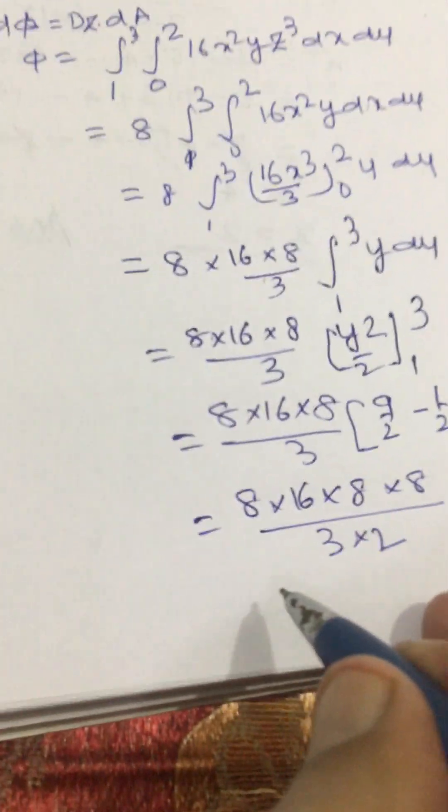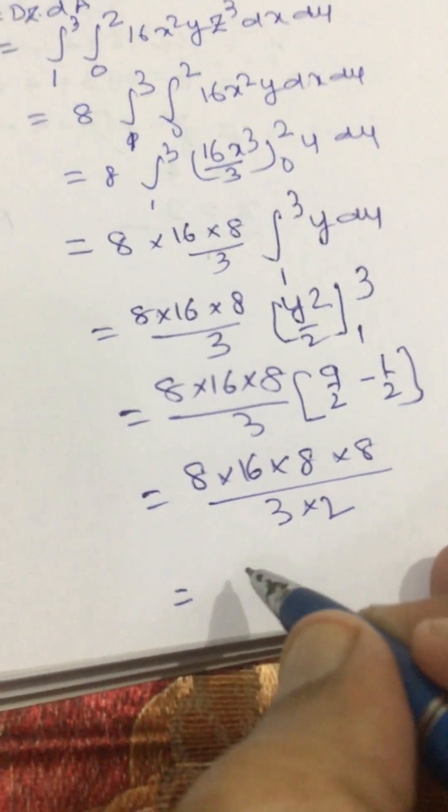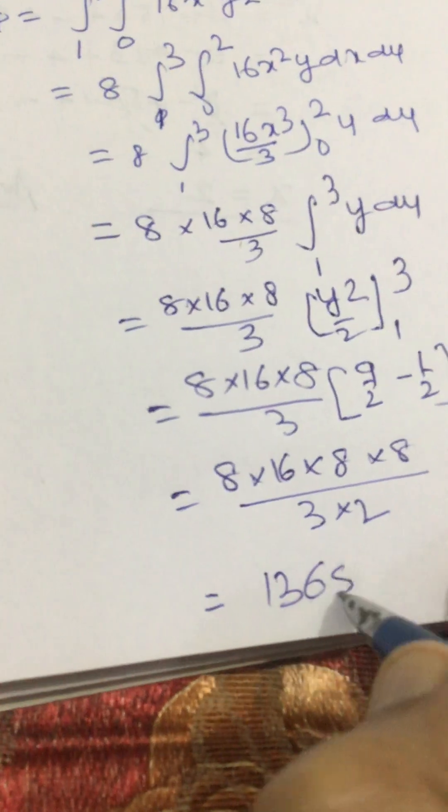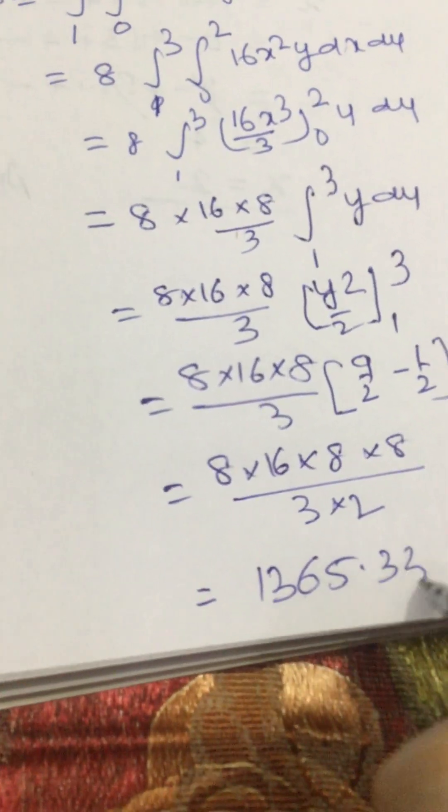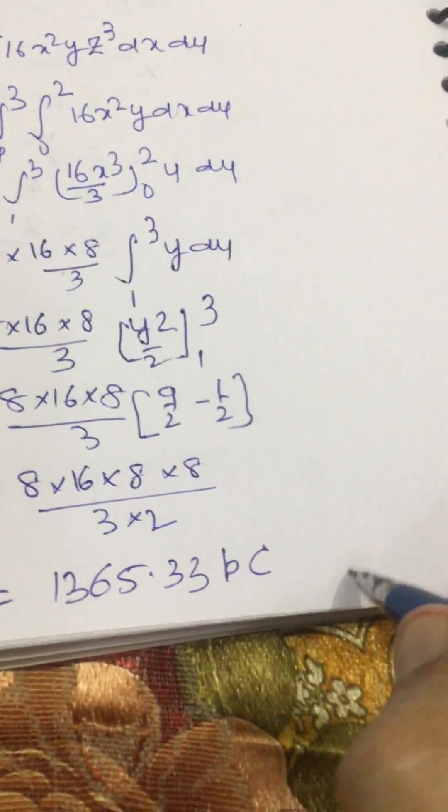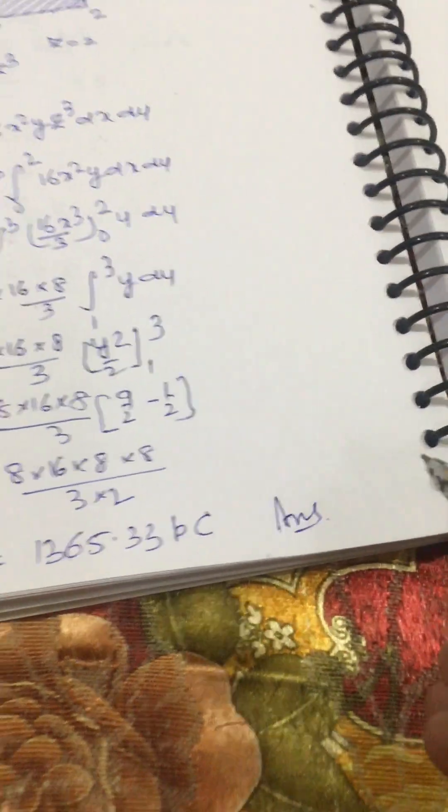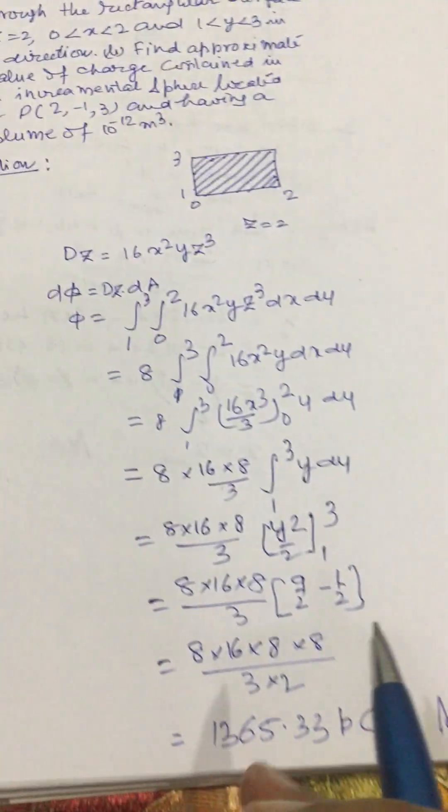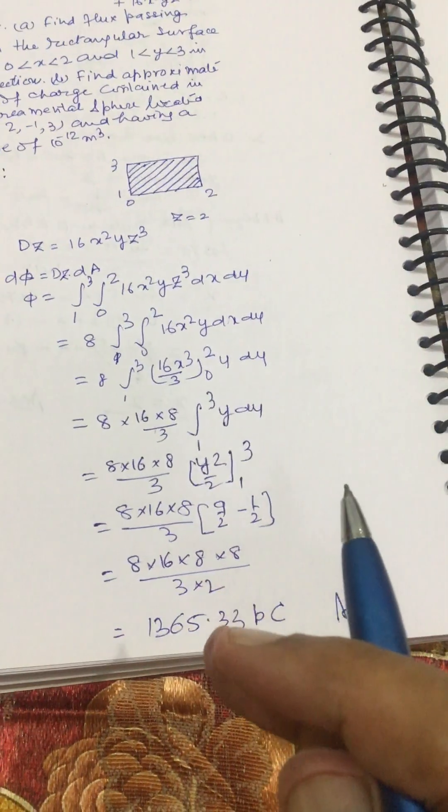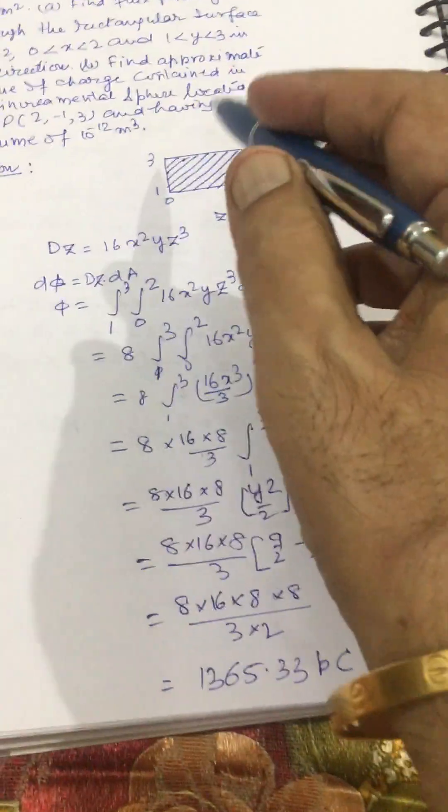If we evaluate it, then we get 1365.33 picocoulomb, and it is our answer. Dear friends, this is how we can evaluate this flux passing through this xy plane in this area.